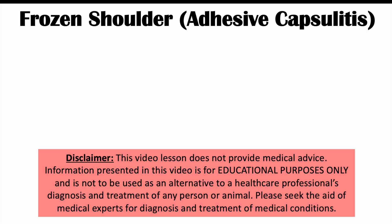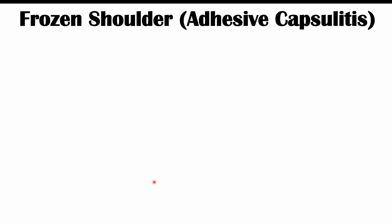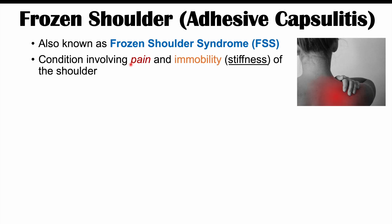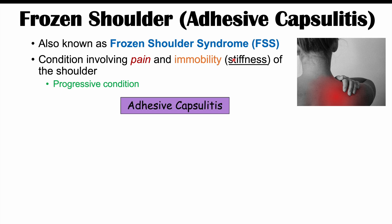This lesson is on a condition known as frozen shoulder, which is also known as adhesive capsulitis, or frozen shoulder syndrome (FSS). It is a condition involving pain and immobility or stiffness of the shoulder. It is a progressive condition, which means it gets worse over time, and we'll talk about this in more detail when we discuss the clinical features.